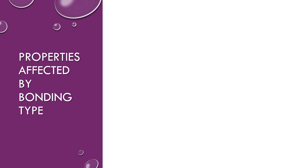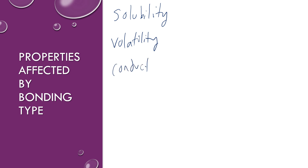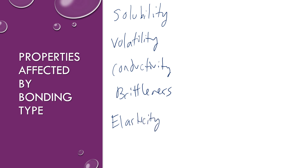Let's review some of the properties of compounds that are affected by their bonding type. The ones I want to talk about today are solubility, volatility, conductivity, brittleness, elasticity or plasticity, and corrosion.